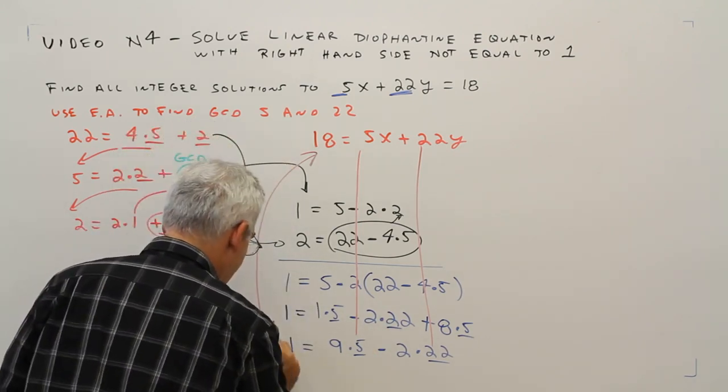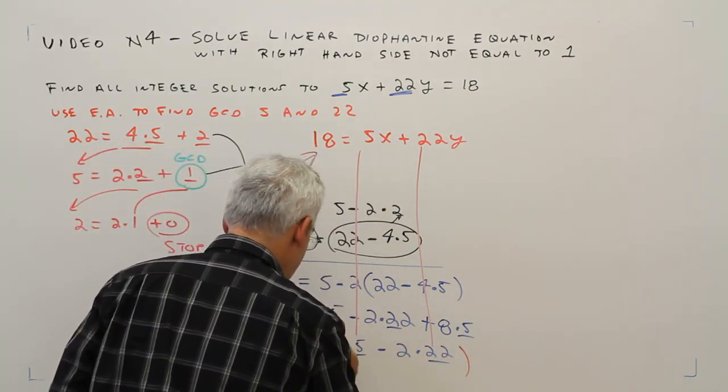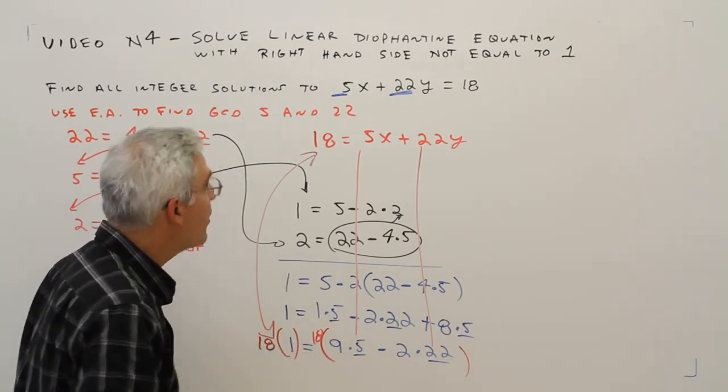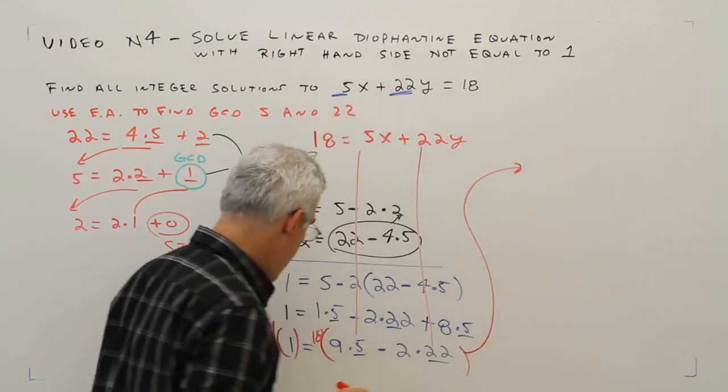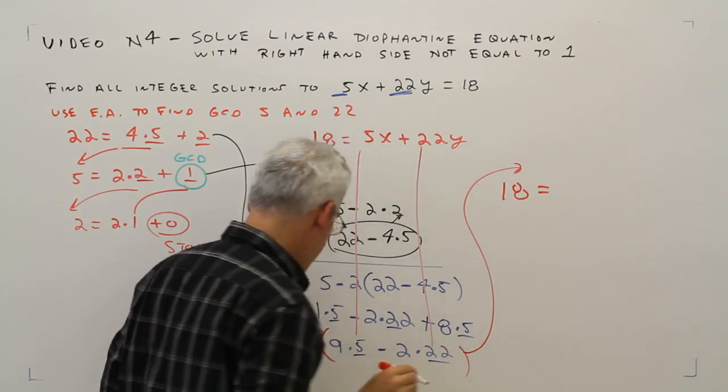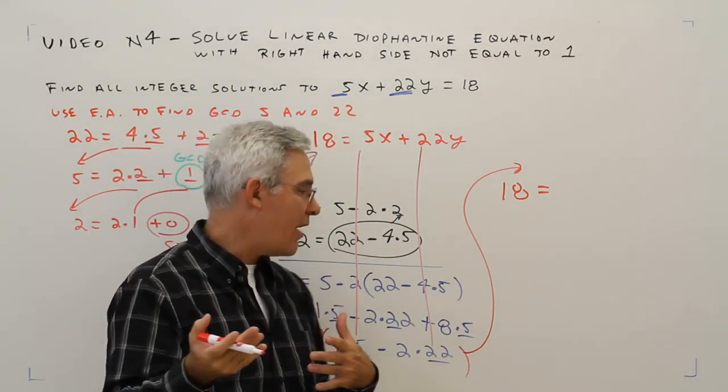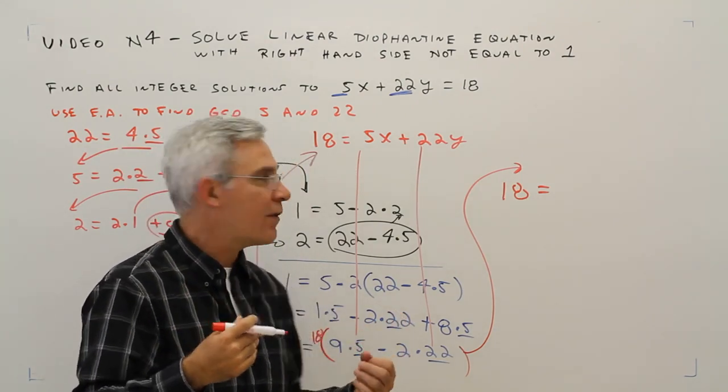I'm going to multiply the whole left side by 18 and the whole right side by 18, remembering to distribute. So I'll show that step over here. I'm going to get 18 equals 18 times 9. I'm much better with 18 times 10—that's 180. Take away an 18, that's 162.